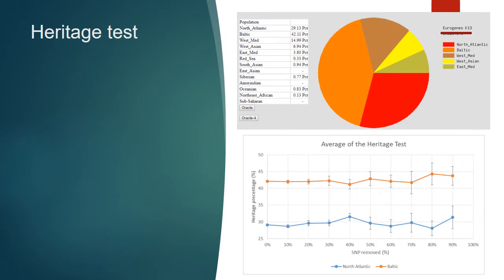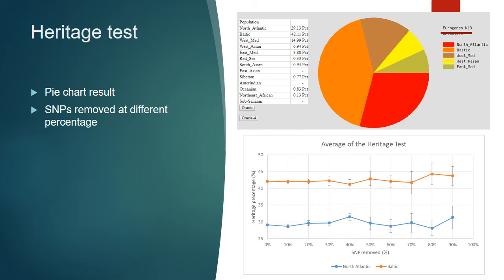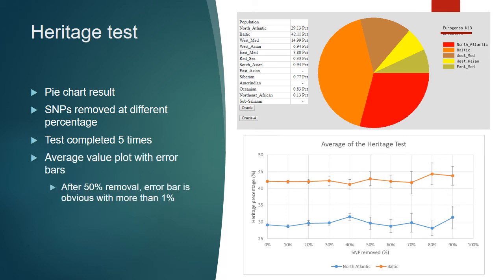The first test was a heritage test. The top pie chart shows the different percentages of heritage. We removed different SNPs — the x-axis on the bottom graph shows SNPs removed from 0 to 90%. We ran this test 5 times and averaged the results. At about 50% removal there was about a 1% difference in error bars, which has big significance.